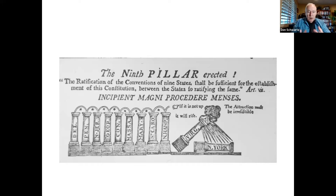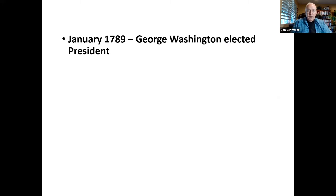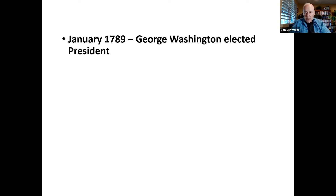Those state legislatures ratified the Constitution on the assumption that the Bill of Rights would be added, and the Bill of Rights was added after ratification. In January of 1789, George Washington was unanimously elected President of the United States — all the electors voted for him. In those days, electors had two votes, so the candidate with the second most electoral votes, John Adams, served as Washington's vice president.